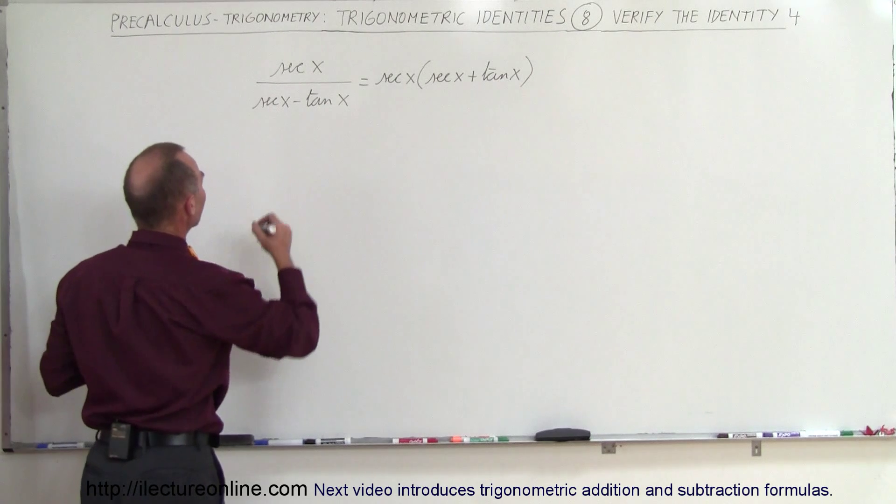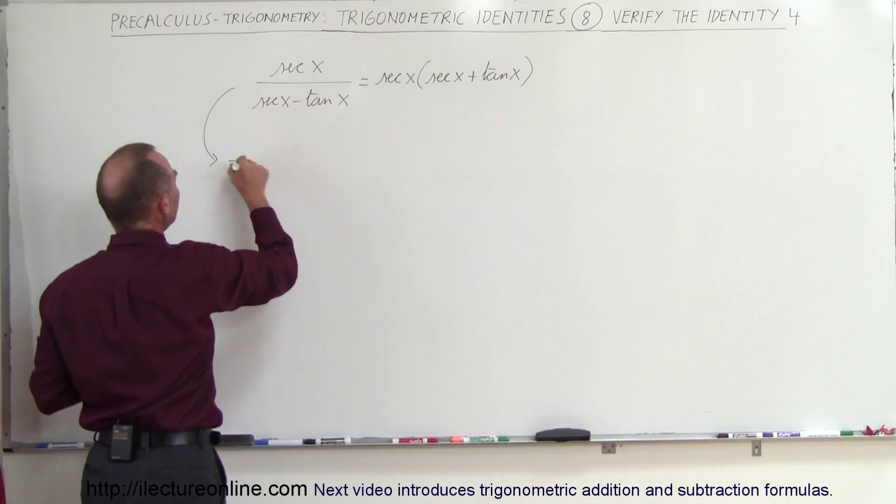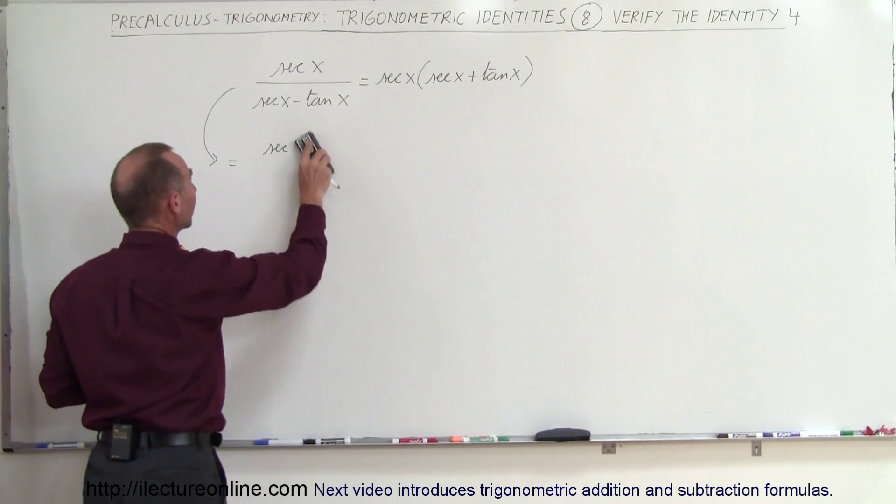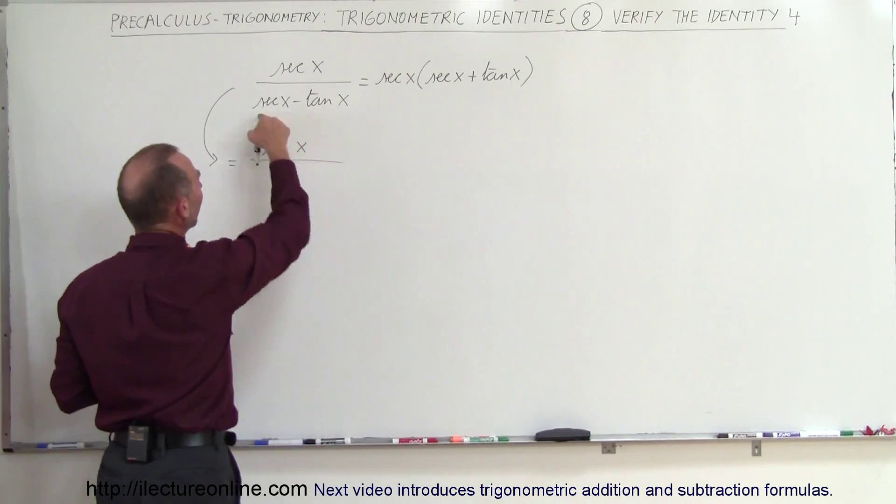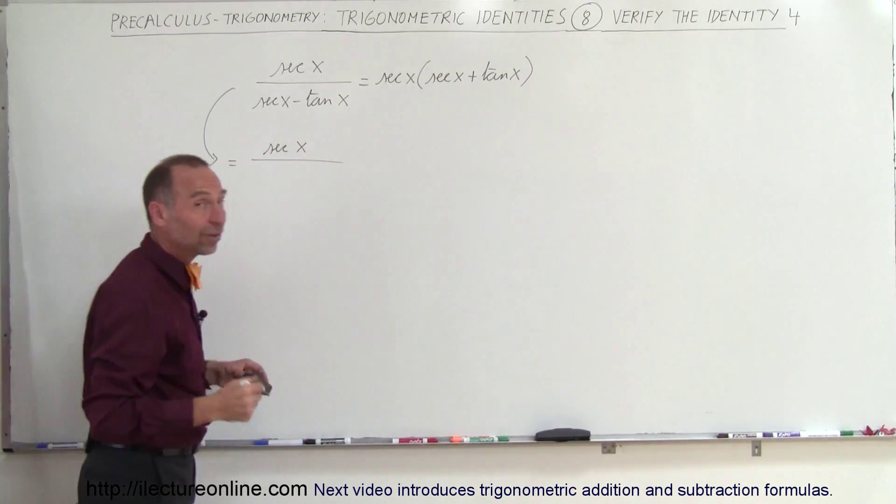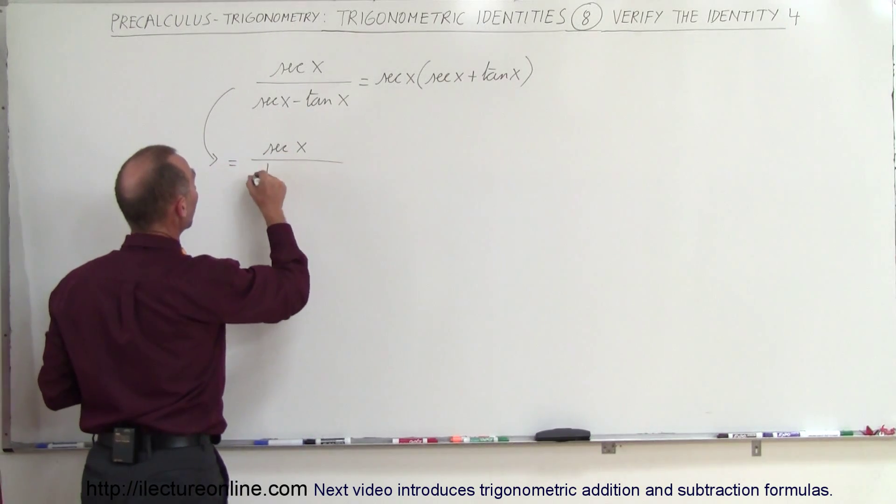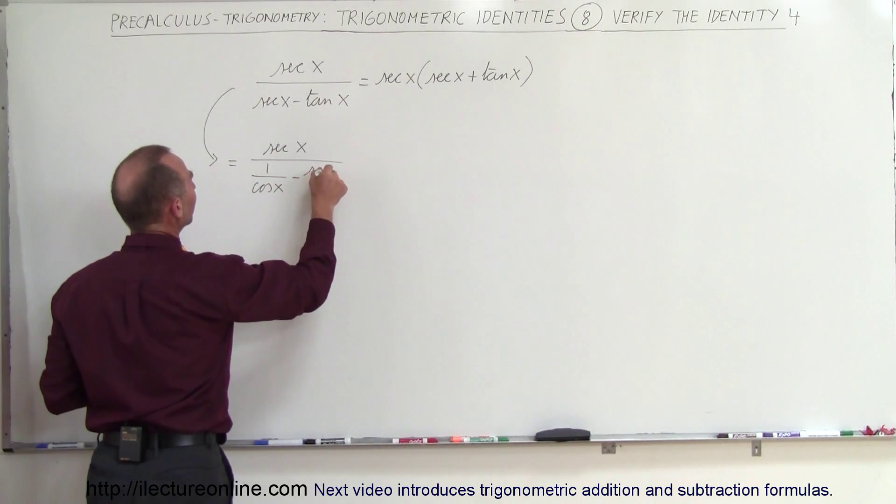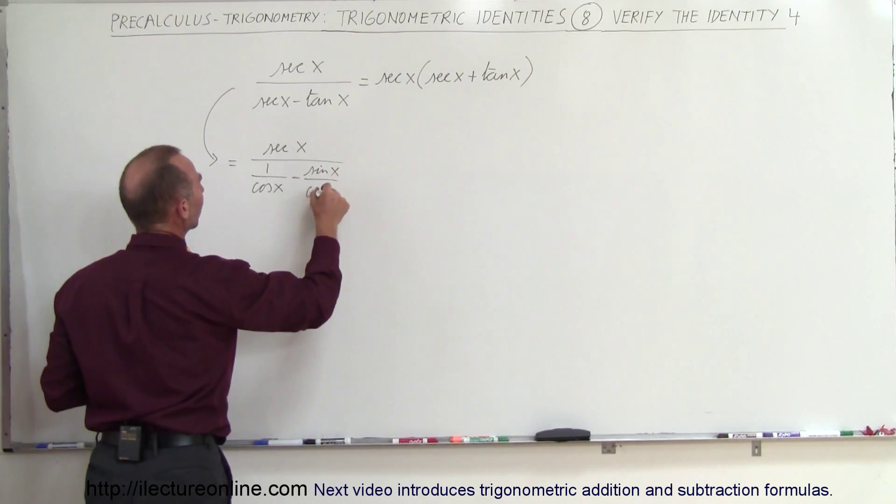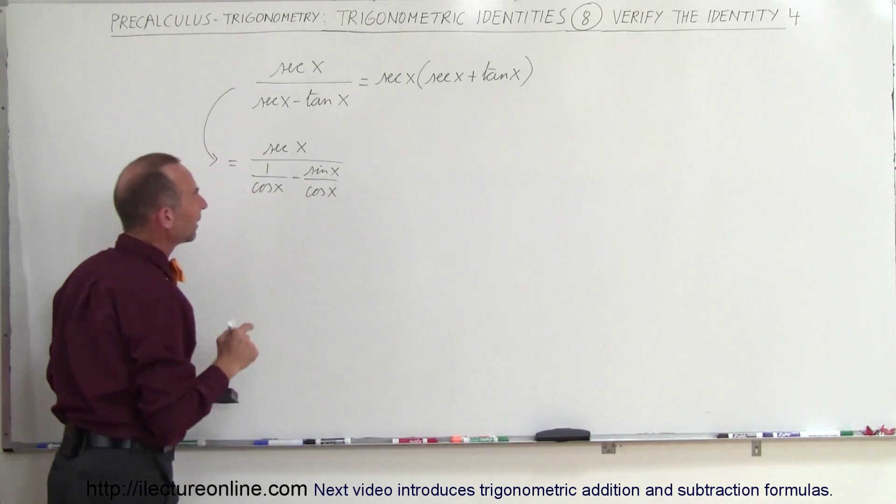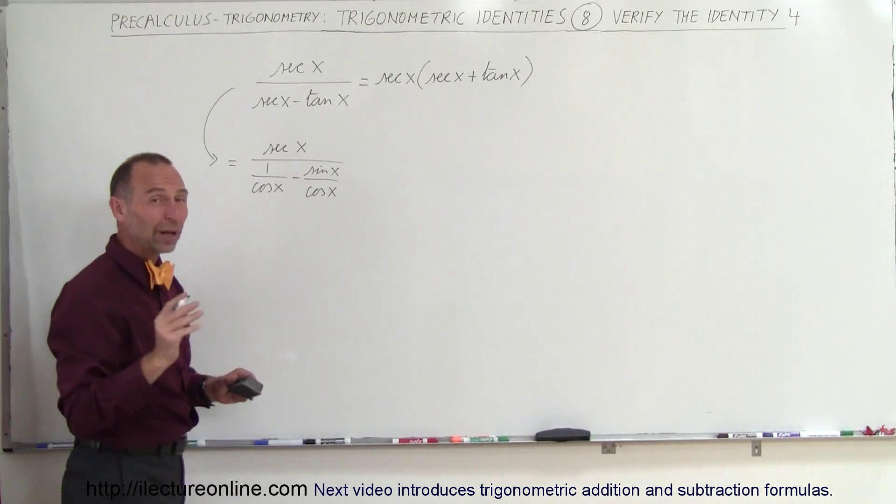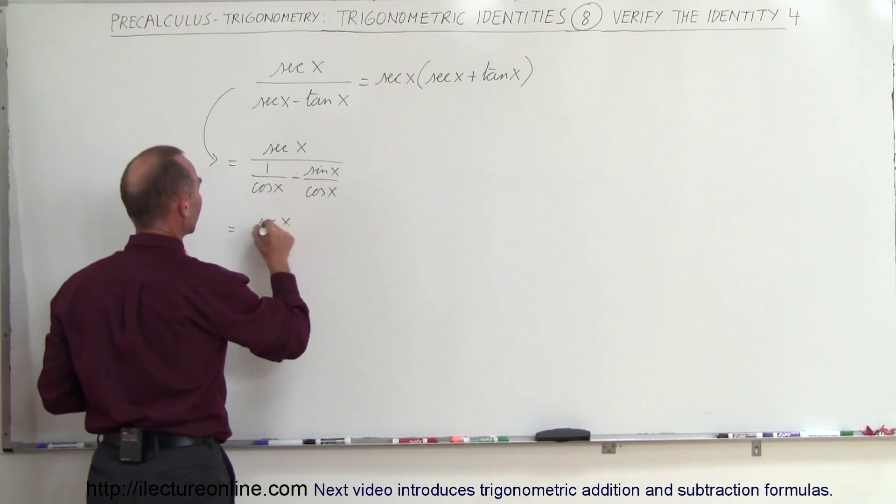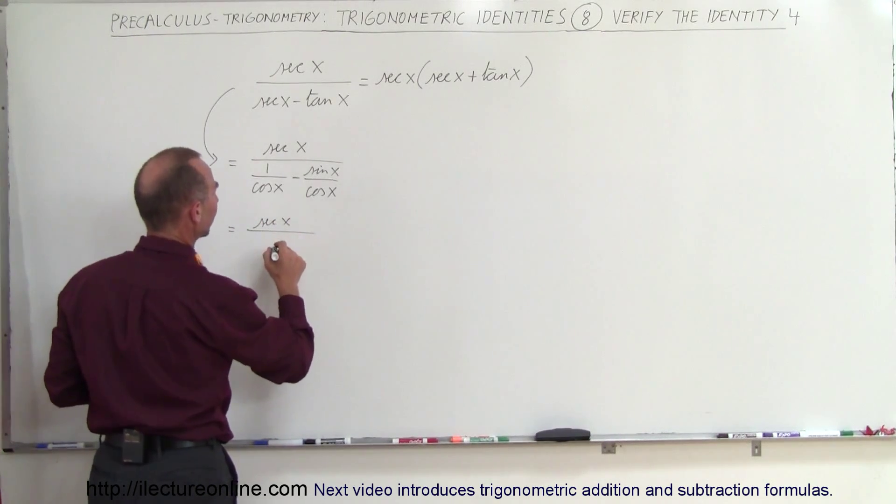And so I'm going to write this as the secant of x, and I always want to write this as an exponent here, the secant of x divided by, write this in terms of sines and cosines and see what we get. So that would be 1 over the cosine of x minus the sine of x divided by the cosine of x. Now notice that we have a common denominator, so I can write it over a common denominator. So this can be written as the secant of x divided by, let's see here,